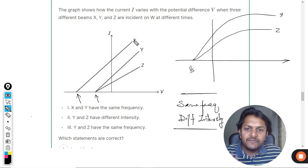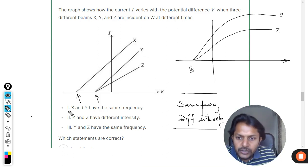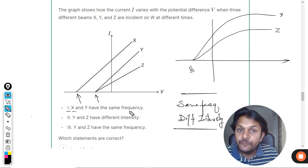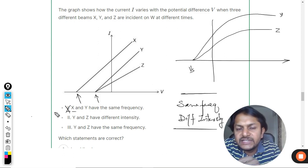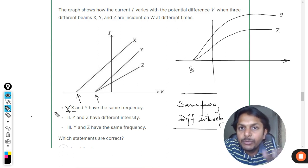So X is having a different frequency than Y. Now the point number one says X and Y have the same frequency. Now that cannot be, because if they have the same frequency, they will be having the same stopping potential.